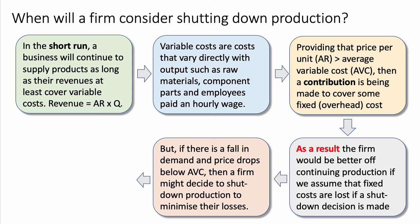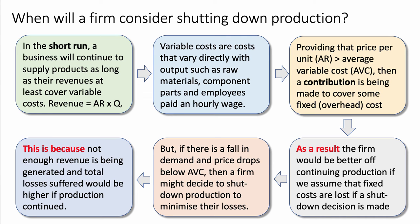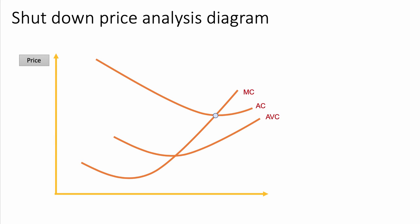However, if there's a fall in demand and the price drops below average variable cost, the business might opt to shut down some or all of production - maybe close a plant or shop - to minimize their losses. This is because - another useful connecting phrase - not enough revenue is being generated, and total losses would be greater if they carried on producing in the short term. This can all be built into a chunky paragraph as a chain of reasoning.